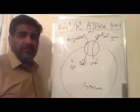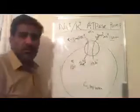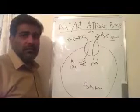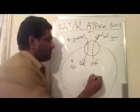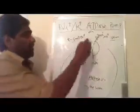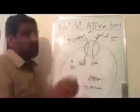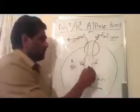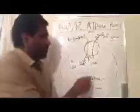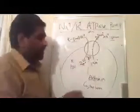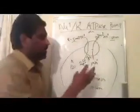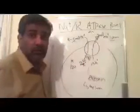Now let's look at a famous medicine which inhibits the function of this sodium-potassium ATPase pump. That is none other than the cardiac glycoside called Digoxin. Digoxin goes and inhibits the sodium-potassium ATPase pump only in cardiac muscles — heart muscles. When Digoxin inhibits the sodium-potassium ATPase pump, that means sodium cannot be pumped out of the cell.